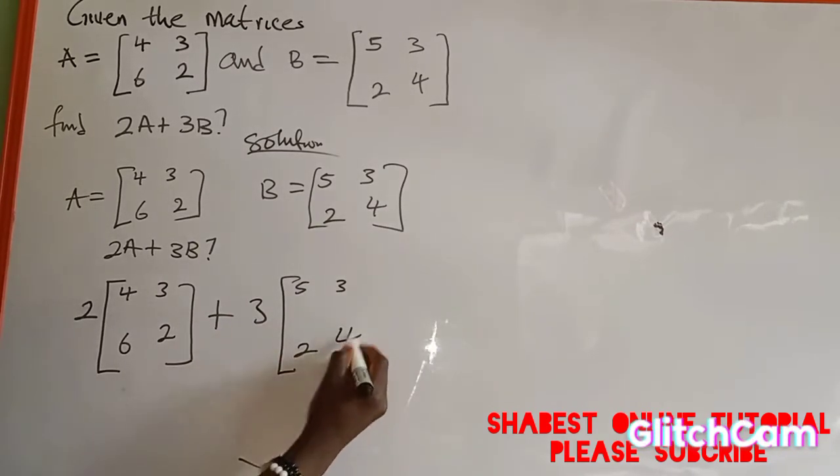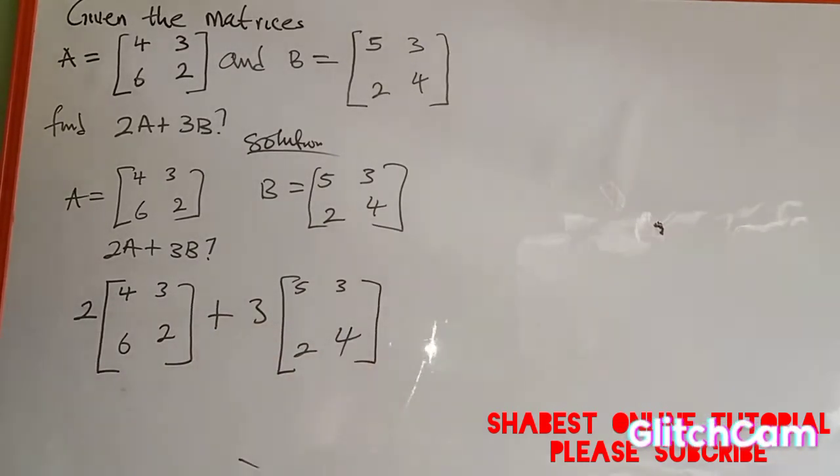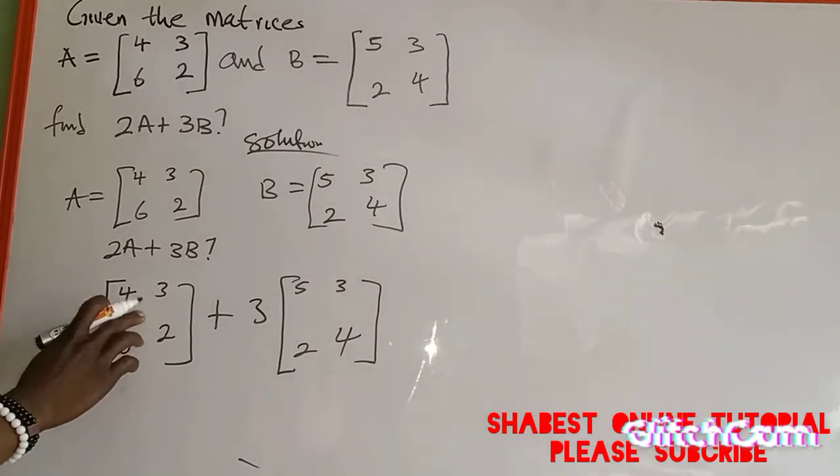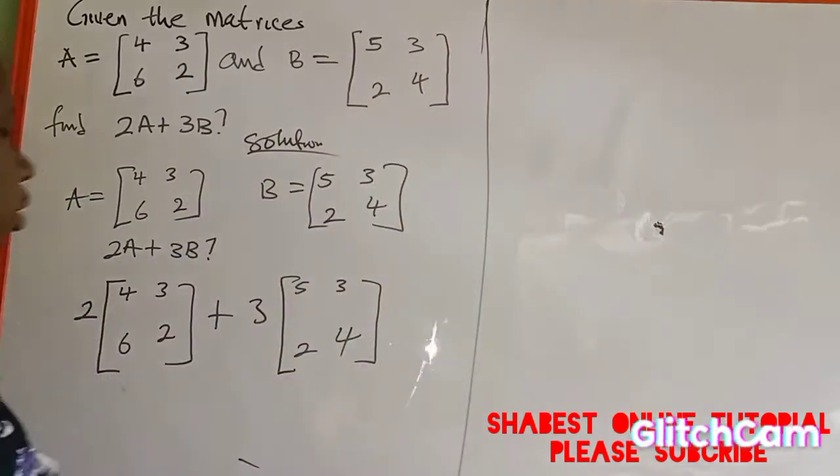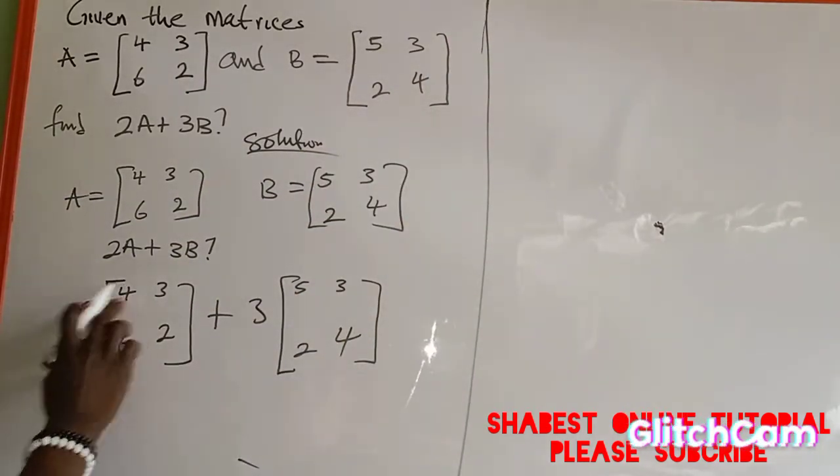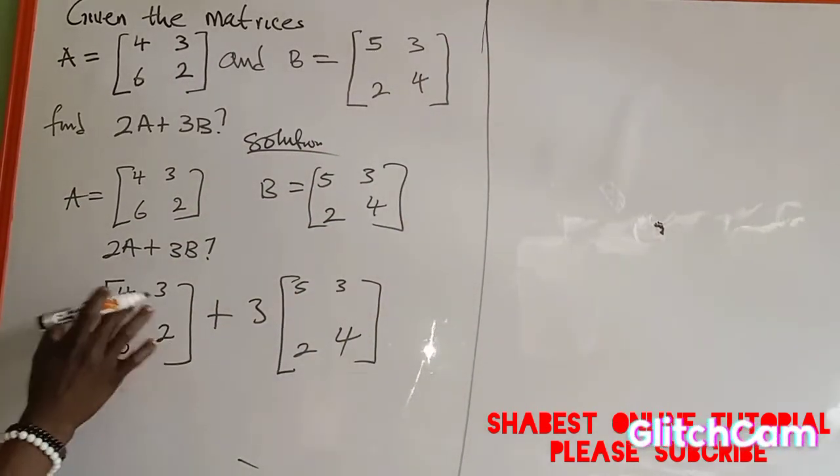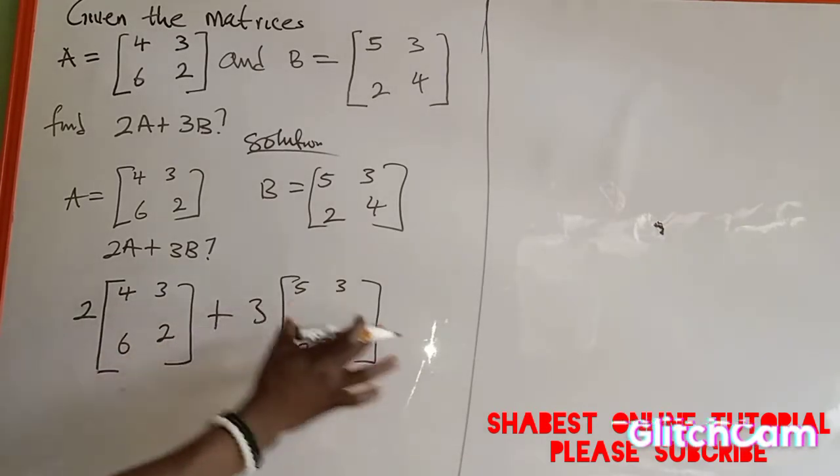Now we are going to use these two to multiply everything in this bracket. So I'll have 2A: 2 into this A, 4, 3, 6, and 2, plus 3 into the matrix of B.